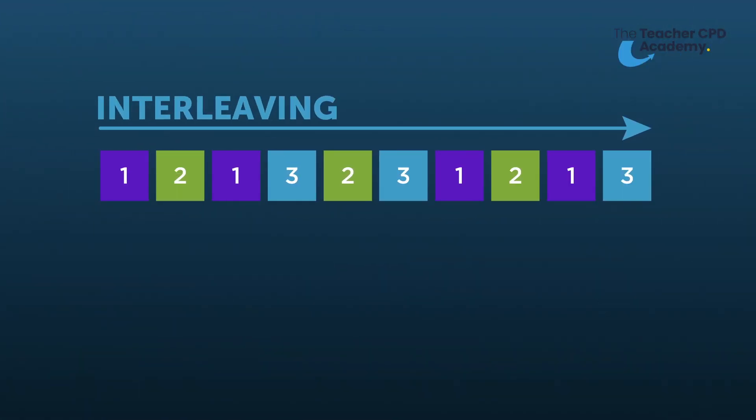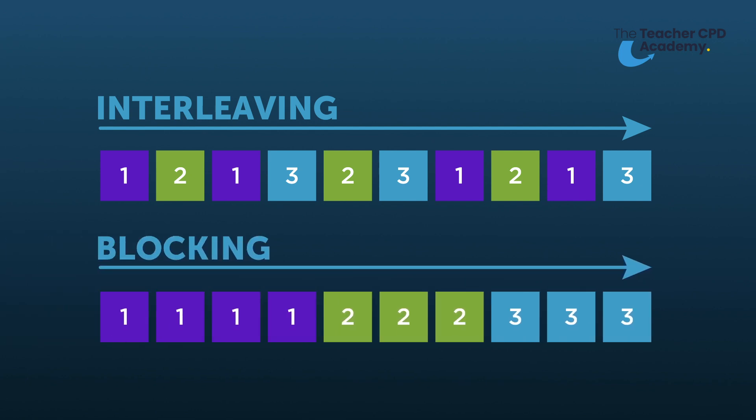Interleaving refers to the practice of mixing up the order of topics within a subject. The opposite is known as blocking, which is where you cover one topic in its entirety at a time.